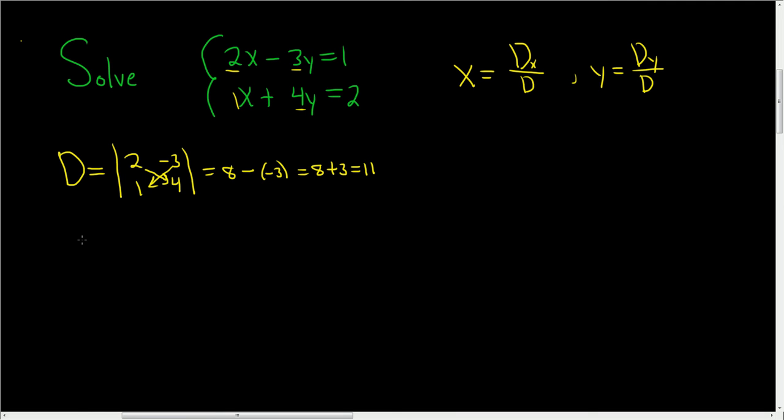Now we have to compute big D sub X. If this had been 0, then there's a problem here. So it turns out that when big D is 0, you have either no solution or infinitely many solutions. But in this case, big D is not 0, so we do have a unique solution.